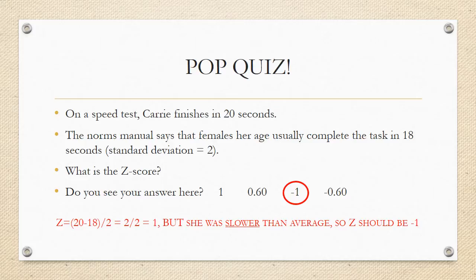Do you see your answer here? The answer is negative 1. So, z is equal to 20 minus 18 divided by 2, which is 2 over 2, or 1. However, she's slower than average, so the z-score should be negative 1.